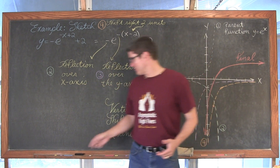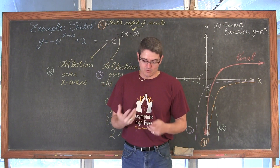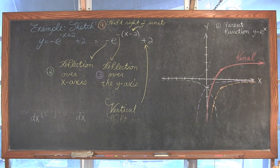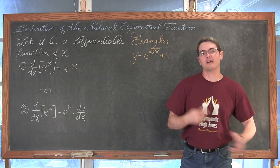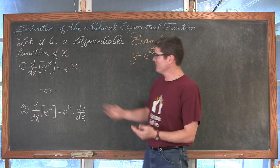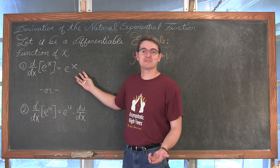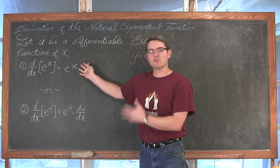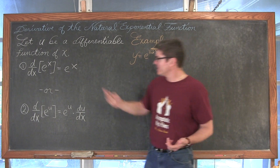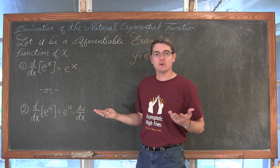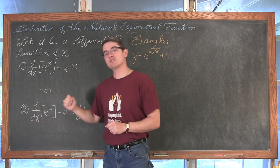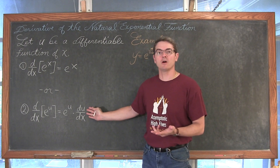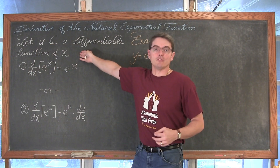Now the derivative rule for the natural exponential function — probably the easiest rule in all of calculus: the derivative with respect to x of e to the x is e to the x. It is its own derivative. With u-substitution and the chain rule, the derivative with respect to x of e to the u equals e to the u times du over dx, where u must be a differentiable function of x.